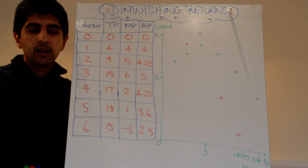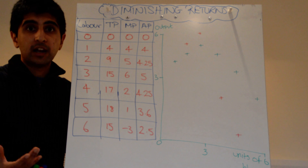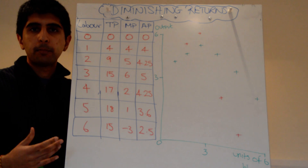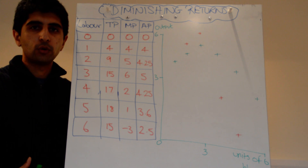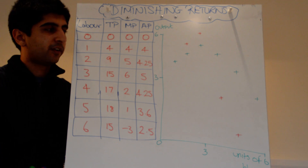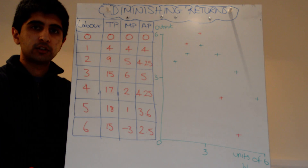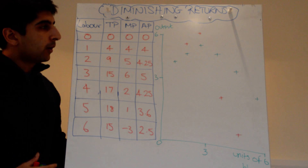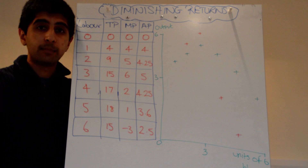In the short run, firms are restricted, whether by resources or by money. Therefore they can't expand production by buying new factories or machinery — it's too expensive. Whereas in the long run, as the firm gets bigger, they can expand much easier by varying all factors of production. In the short run the variable factor is assumed to be labour.